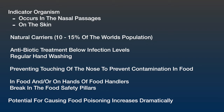S. aureus can be an indicator organism because it occurs in the nasal passages and on the skin. Those who are carriers — usually ten to fifteen percent of the world's population — require antibiotic treatment to keep this bacteria at low infection levels. Hand washing and preventing touching of the nose are key to preventing contamination of food. Finding this bacteria in food or on the hands of food handlers tells us there has been a break in the food safety pillars, and the potential for causing food poisoning increases dramatically.